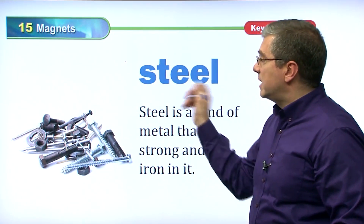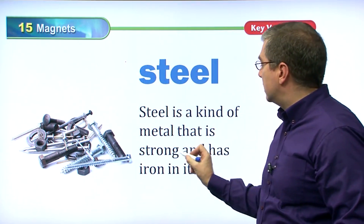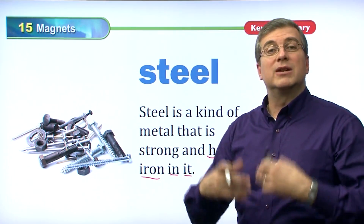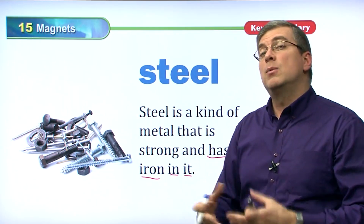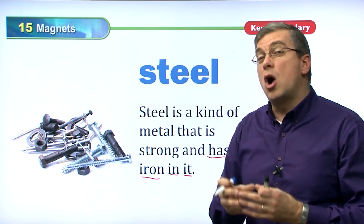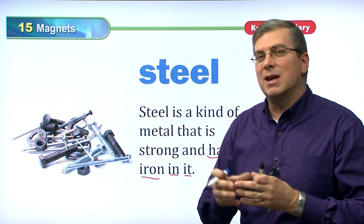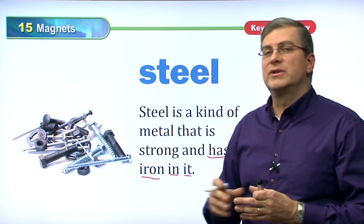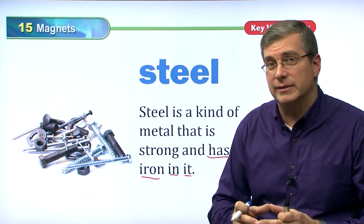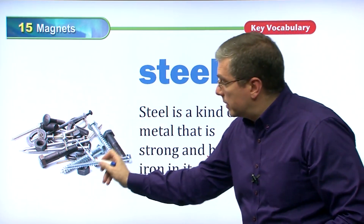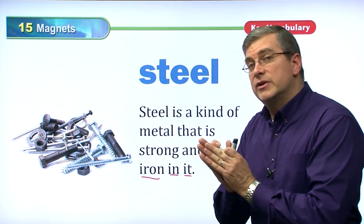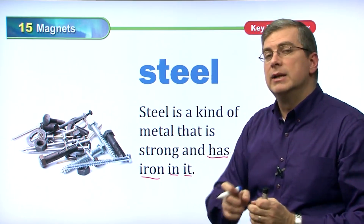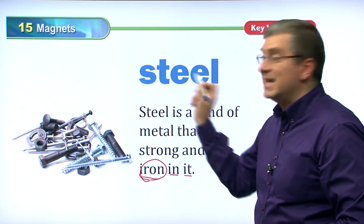Steel is also attracted to magnets because steel is a strong metal that has iron in it. Human beings learned to use iron at much hotter temperatures to make steel, which is stronger. Once we learned how to make steel, we used iron less. But steel still has iron in it, so those atoms still change direction and are attracted by the magnet.